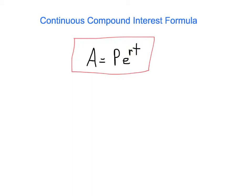And it looks exactly like what I've written here: A equals P times e raised to the rt. You might even hear me call this 'A equals pert' because it spells out pert. And I have no sense of humor.